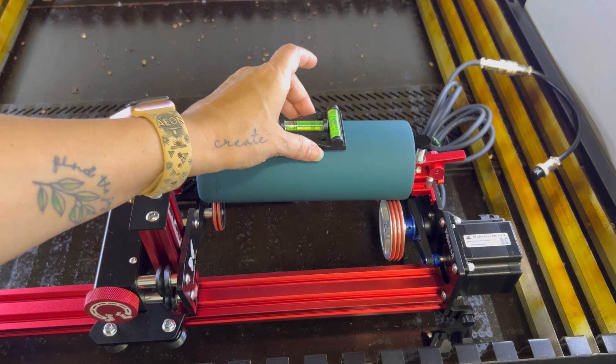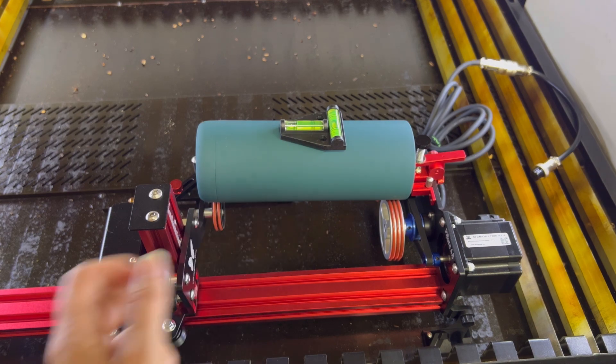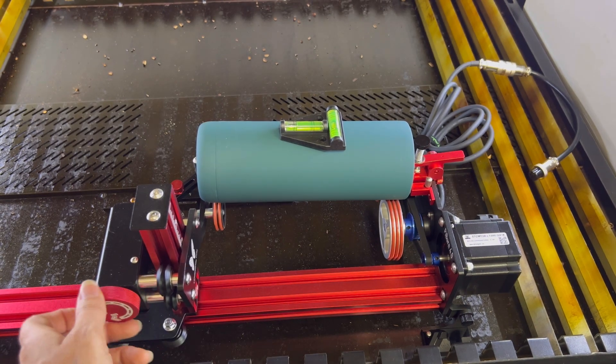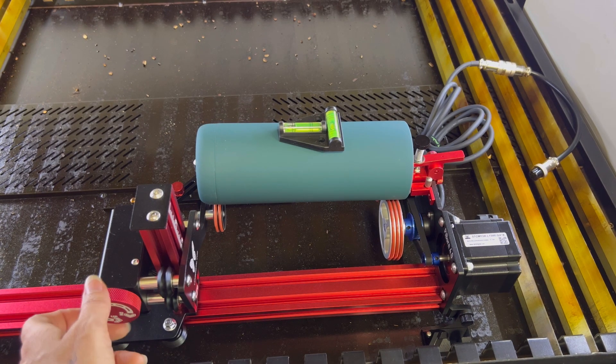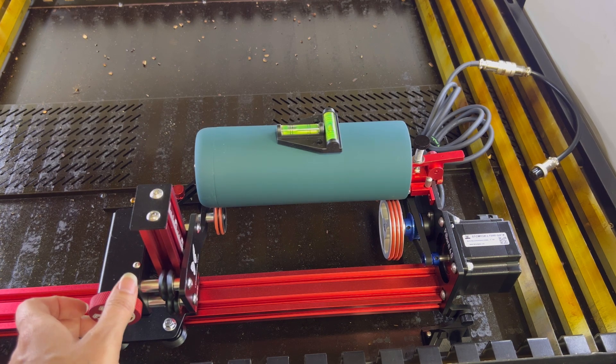Next we're going to level it. Place your level on the tumbler and then use the dial to raise or lower the end of the tumbler to get it level. We're going to watch the bubble in the middle to make sure it's nice and level.